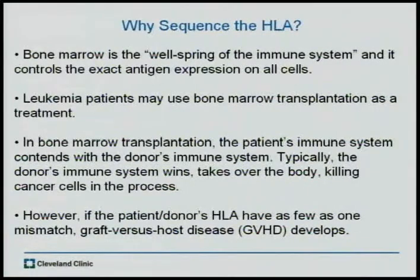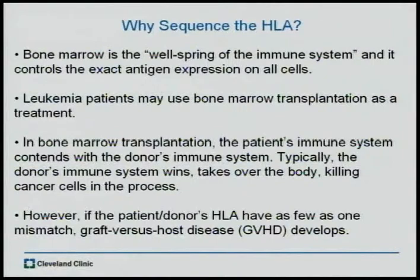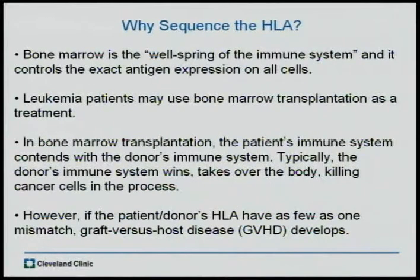So why do we sequence the HLA? Bone marrow is really the wellspring of the immune system, and that's where all of the antigen expressions are controlled. When a patient has leukemia, their bone marrow is degraded to the point where they sometimes need a bone marrow transplantation. As the bone marrow from the donor is given to the recipient, the two fight each other to the point where one overtakes the other. Hopefully, the donor's bone marrow overcomes and is able to, in the process, kill the cancer. However, if the HLA between the donor and the patient differs by as few as one mismatch, something known as graft-versus-host disease develops.